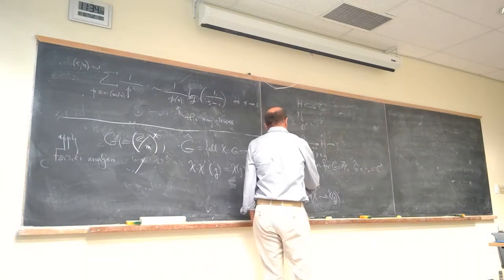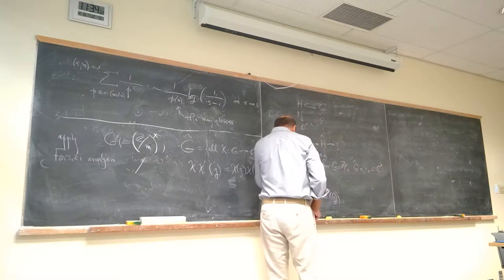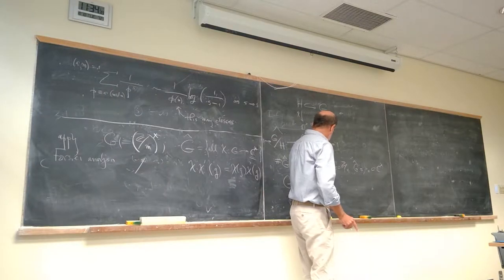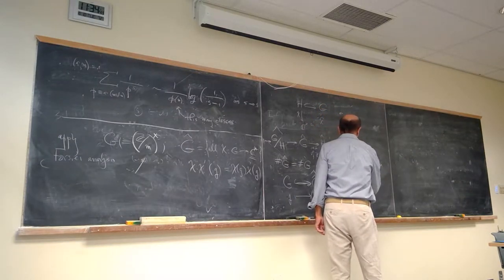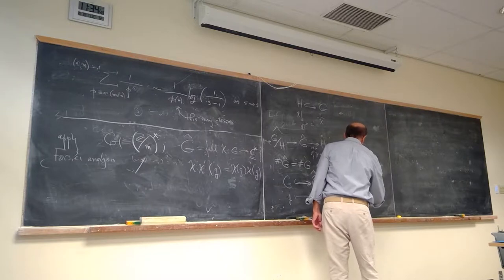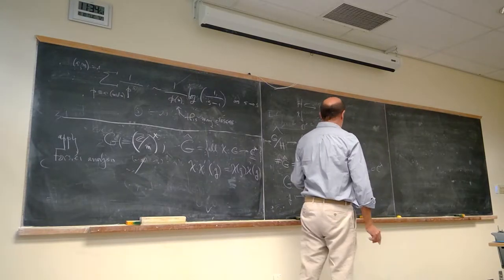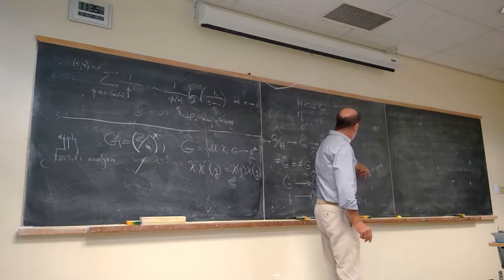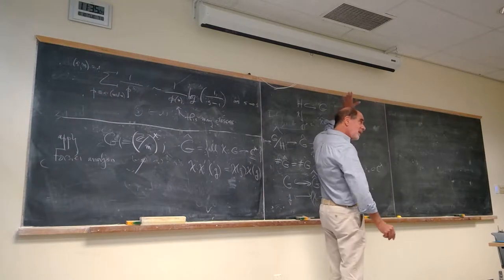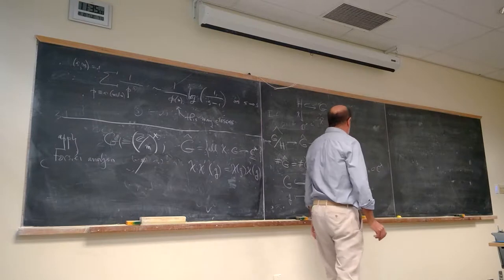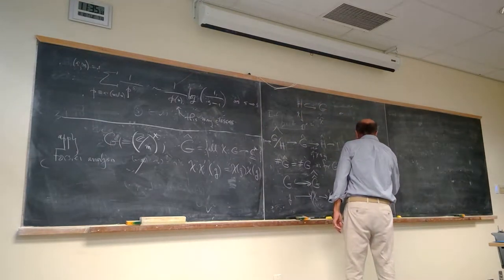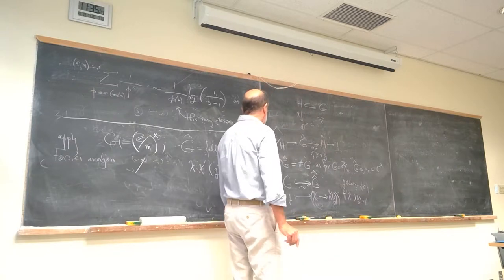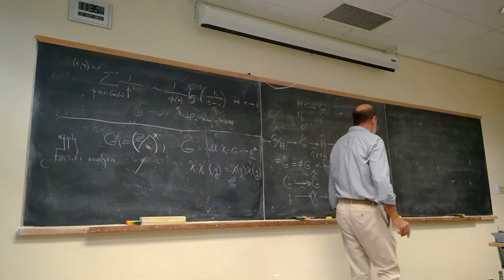This map is injective: if g is in the kernel, then chi(g) = 1 for all chi. But that's true only for the identity element, because for any non-identity element we can construct a non-trivial character of the cyclic subgroup it generates and extend to the whole group. Since these two abelian groups have the same order, the map is an isomorphism. So G is canonically its double dual, and isomorphic to its character group — though not canonically.